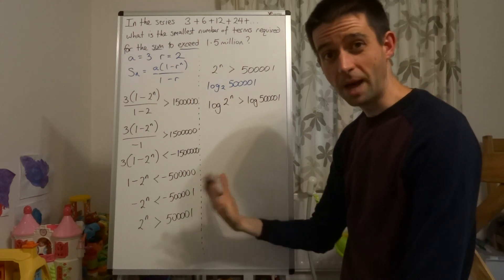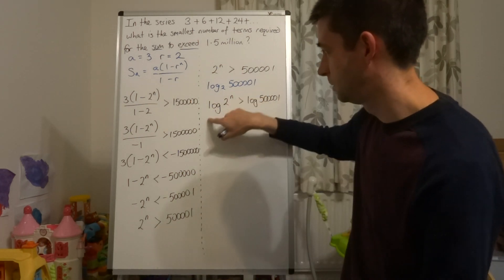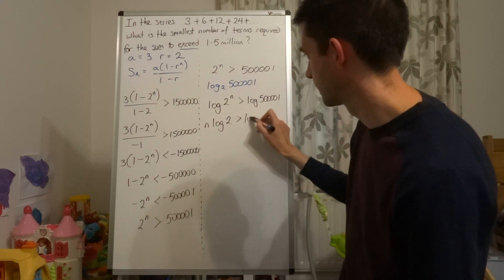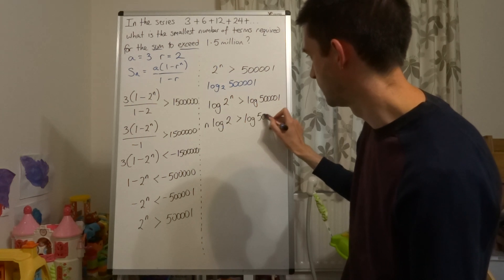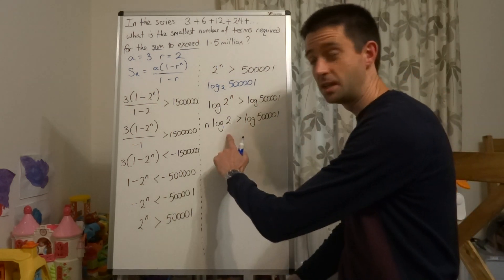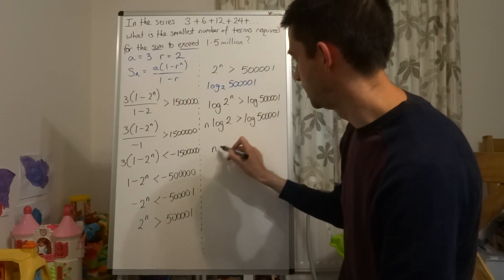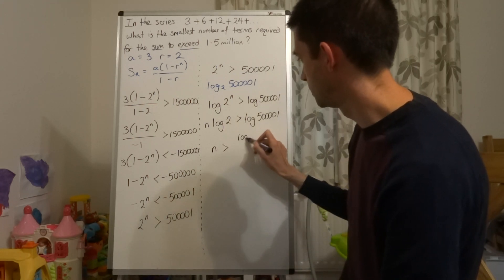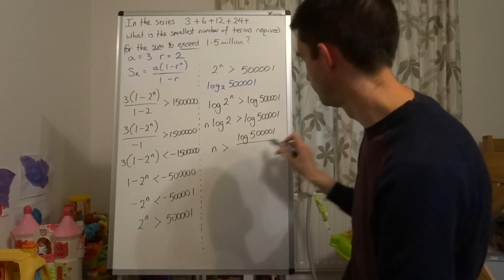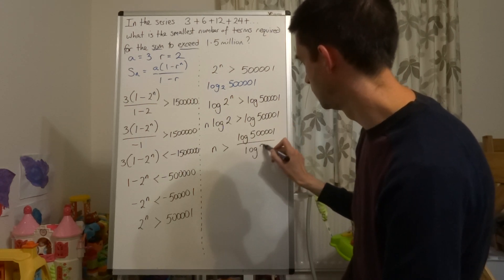We can then use the powers rule of logarithms and place the n in front of log 2, still greater than log 500,001. Now log 2 is a number, which means that we can divide both sides by log 2 to get log 500,001 over log 2.